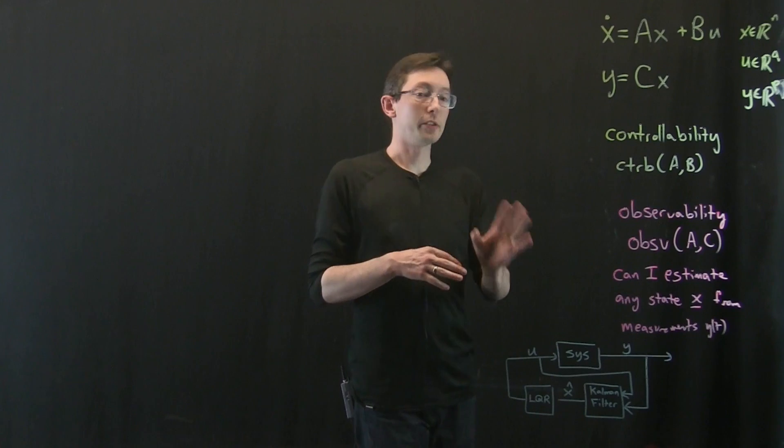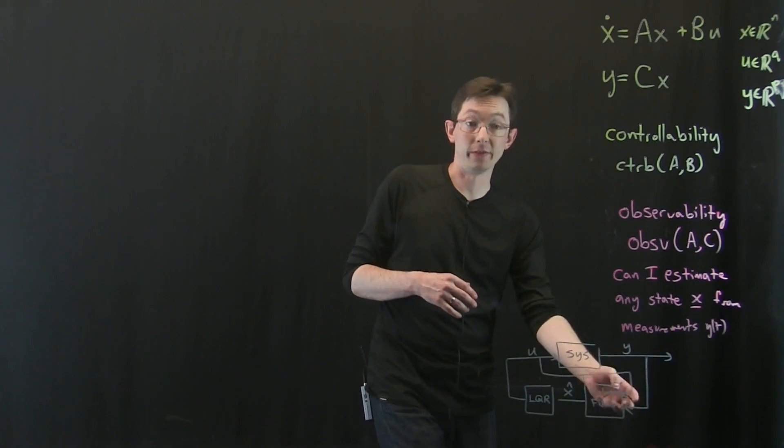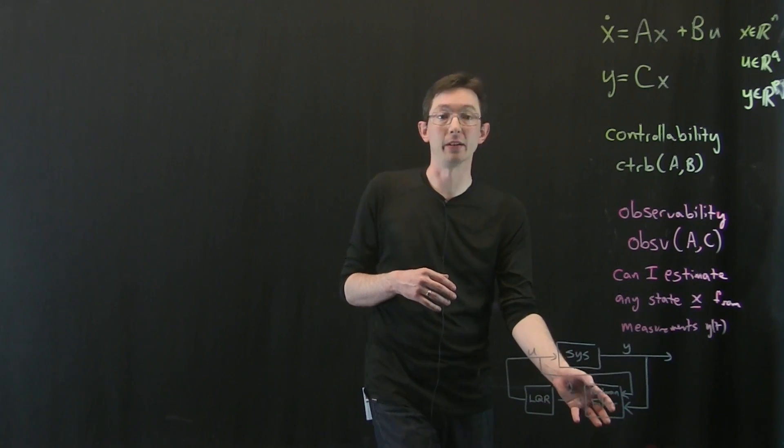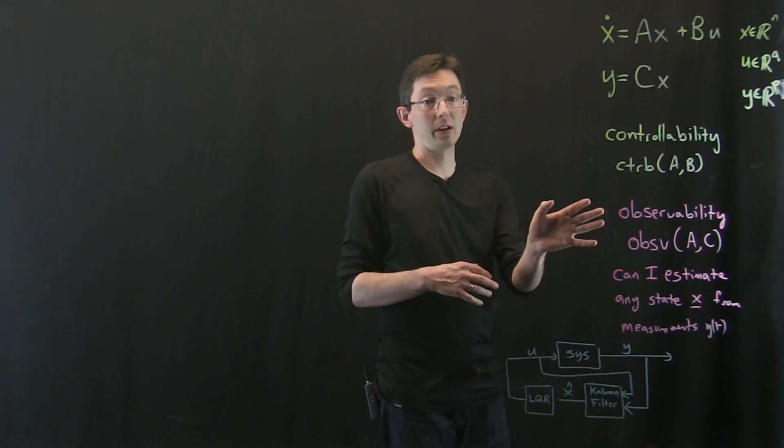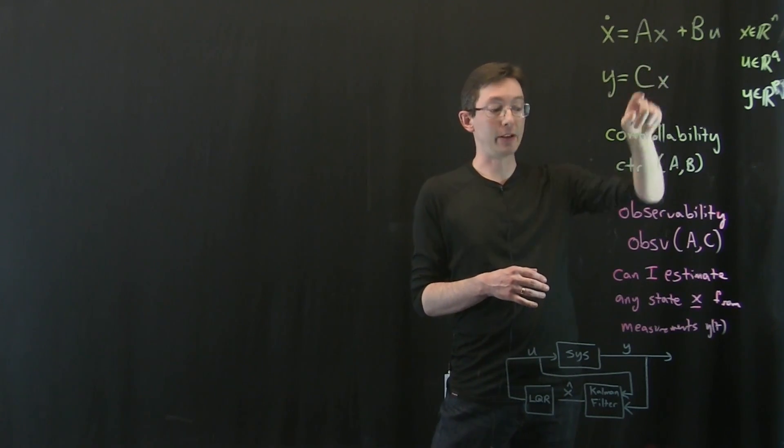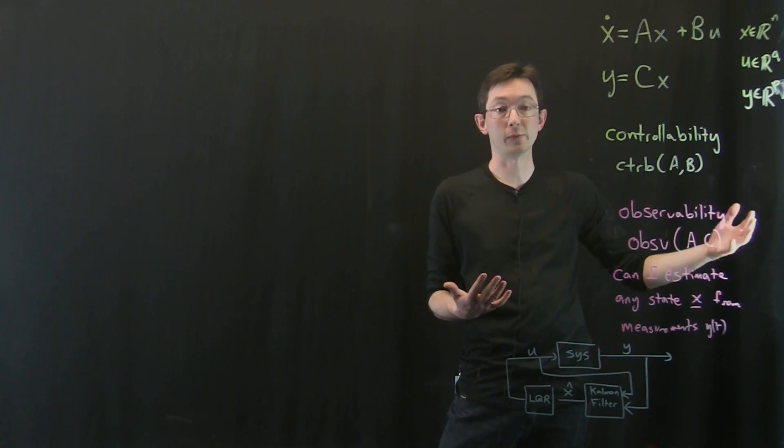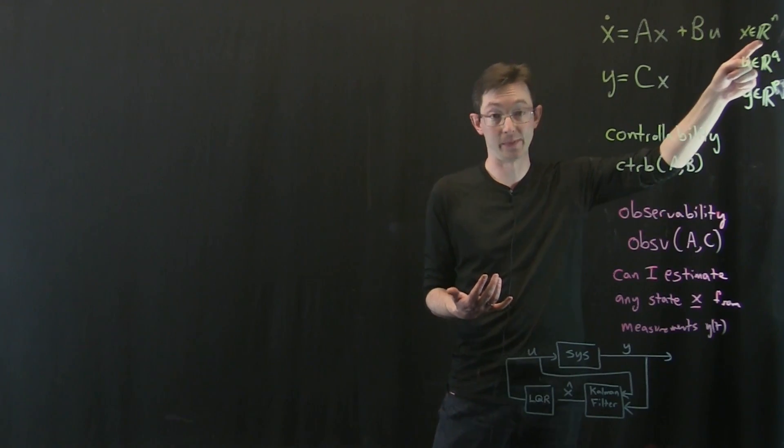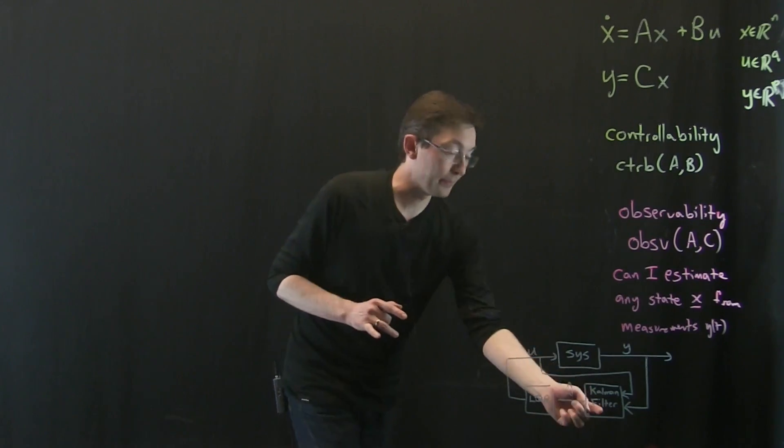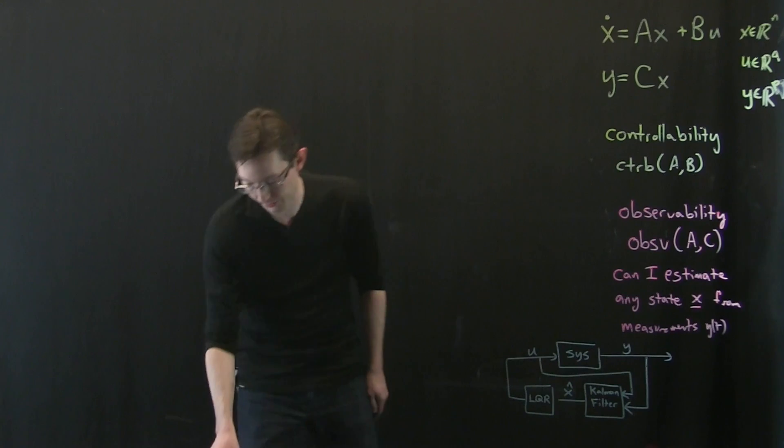Welcome back. Now we're finally ready to actually develop the Kalman filter, the optimal full state estimator if our system is observable. If I have a linear system and the A and C matrices are observable, meaning this observability matrix has rank N and spans the state space, then we can develop an optimal full state estimator that we can then combine with our full state feedback controller.